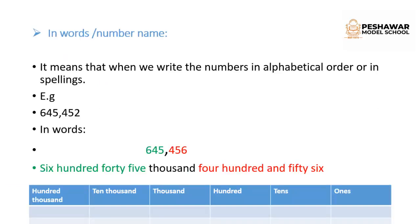The next topic is writing numbers in words, or we can say the name of the number. It means that we write the numbers in alphabetical order or in spellings. For example: